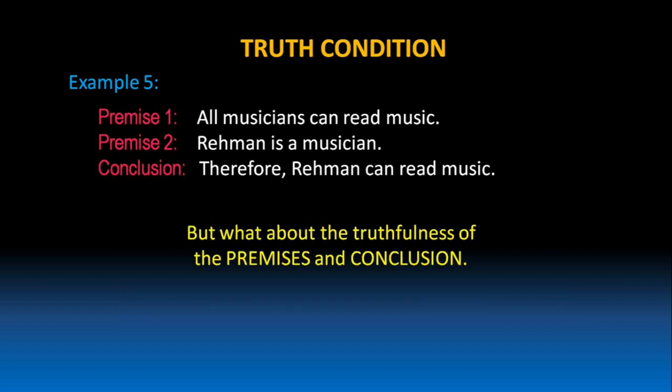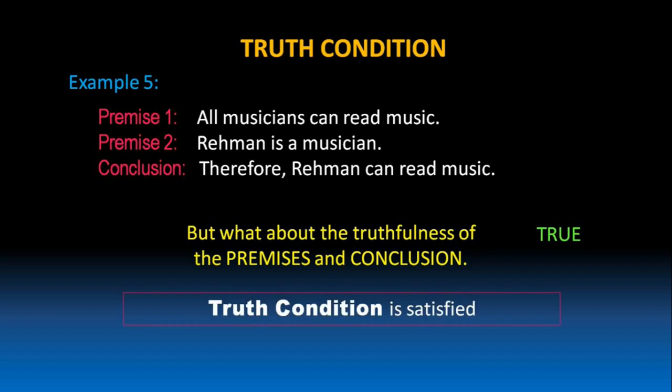But what about the truthfulness of the premises and the conclusion? When we look at premise 1, it says all musicians can read music, and it is true in the world in which we are living in. All musicians can read music. So, we can conclude Rahman can read music because he is a musician. So, truth condition in this argument is satisfied.